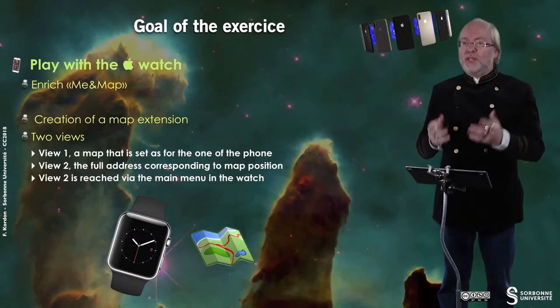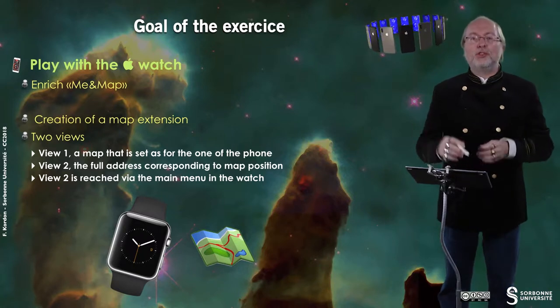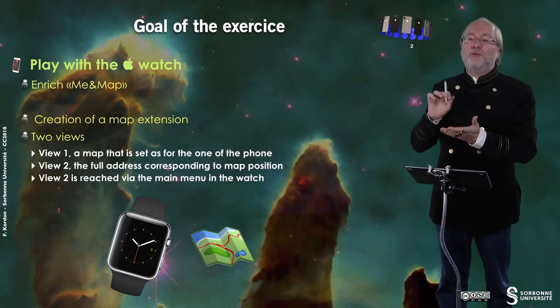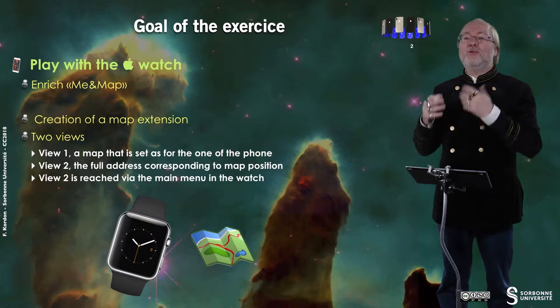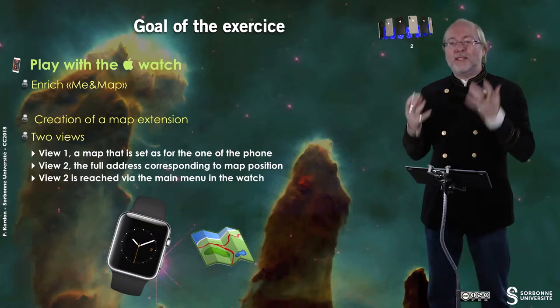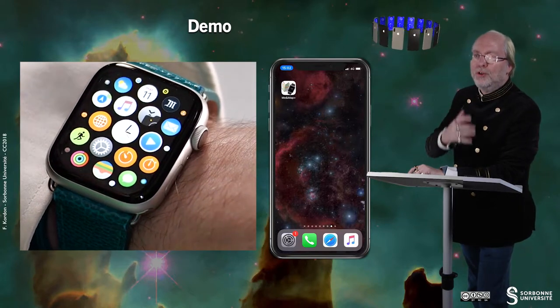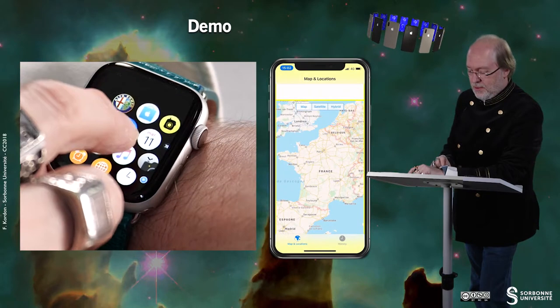You will have to create this extension, and in fact this extension contains two views. The first view is a map that is set the same as the one on the phone — so if you go somewhere on the phone, the corresponding map on the watch is located at the same position. But if you force touch on the view and request information, you have an address view that is pushed, and the watch requests from the phone the address of the currently displayed position.